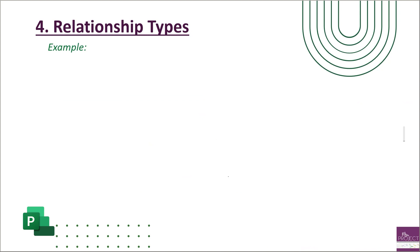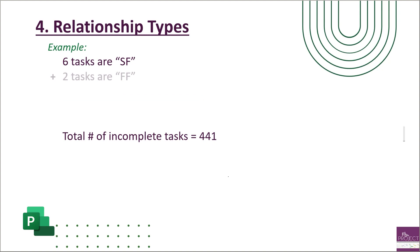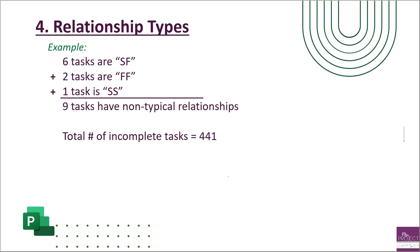Here's an example of how to calculate this. Go through the project and count how many tasks have non-typical relationships. In this example, we have 441 incomplete tasks total: six have a start-to-finish relationship, two have a finish-to-finish relationship, and one has a start-to-start relationship — nine total non-typical relationships. Divide nine by 441, which gives us 2% — well within the 10% margin DCMA allows.